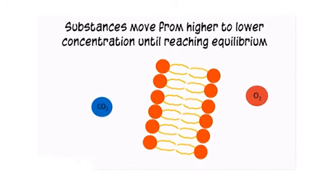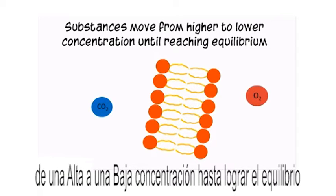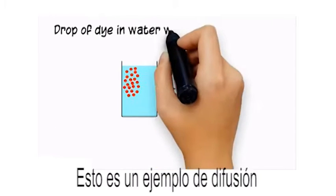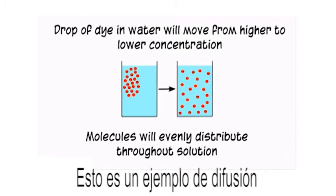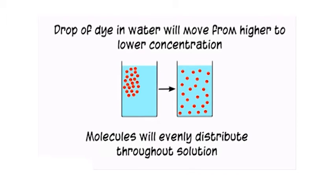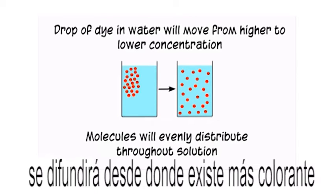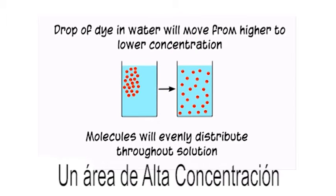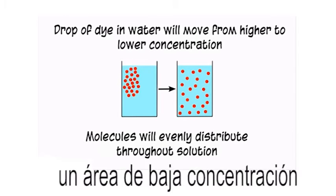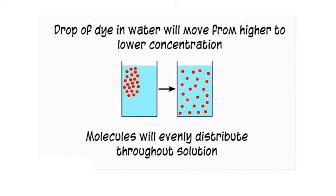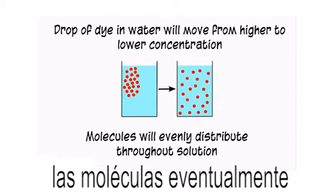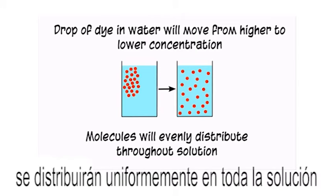Here is an example of diffusion. A drop of dye in water will move from where there is more dye, an area of higher concentration, to where there is less dye, an area of lower concentration. The molecules will eventually evenly distribute throughout the solution.